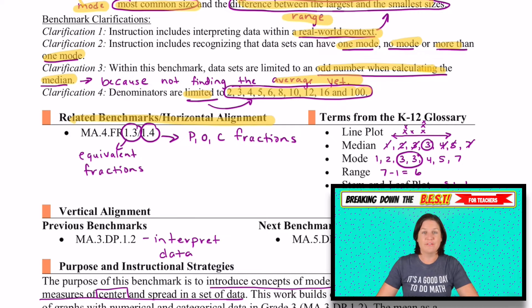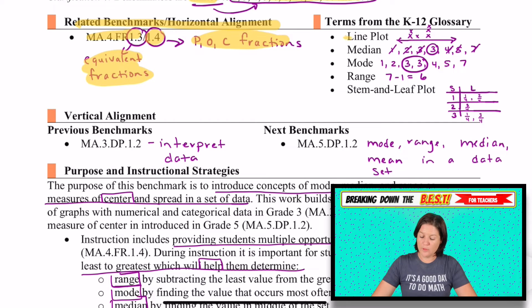Some related benchmarks that we have for this standard would be MA.4.1.3, which is our equivalent fraction standard. And 1.4 is where we are plotting, ordering, and comparing fractions. Some terms that we need to know, line plot, median, that's what I was saying before, is that we need to have odd values. The mode is the amount that appears the most. The range is where we're subtracting the largest number minus the smaller number. And stem and leaf plots look like this, which we explored a lot in the last video on DP.1.1.